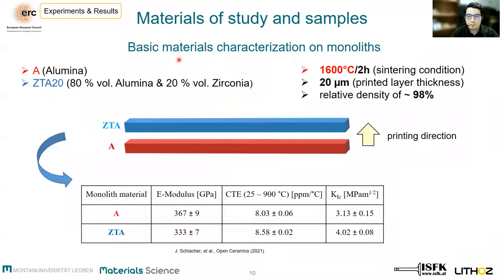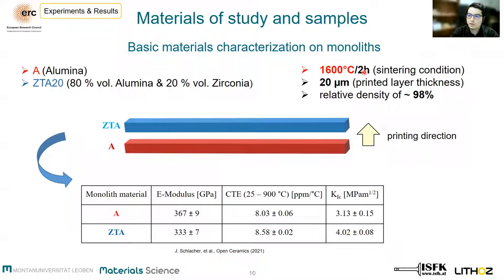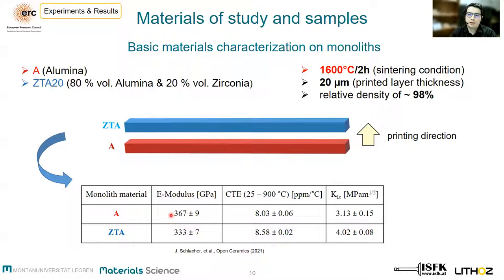First of all, to design an appropriate laminate, we need to know the basic material properties of our systems. The first material was monolithic alumina, and the second one was zirconia-toughened alumina with 20 volume percent zirconia. Bars were printed in this printing direction for characterizing the properties. After printing, a sintering condition of 1600°C for two hours was selected, yielding a relative density of approximately 98%. We can see that the Young's modulus of alumina is significantly higher than that of zirconia-toughened alumina, so the difference in elastic moduli needs to be considered in the correct evaluation of the strength of a multi-material system.